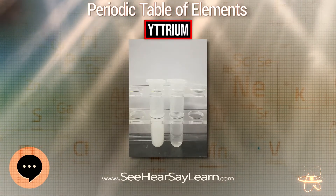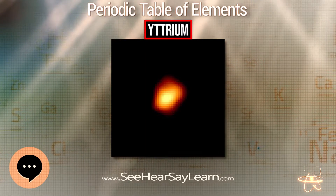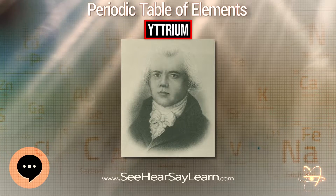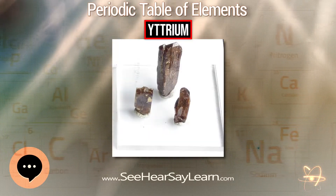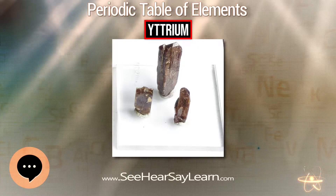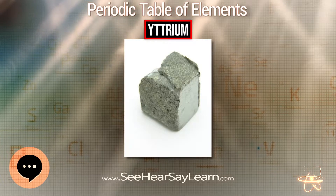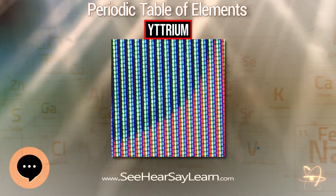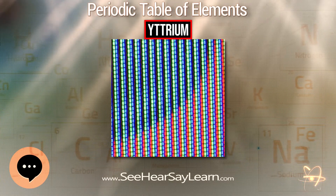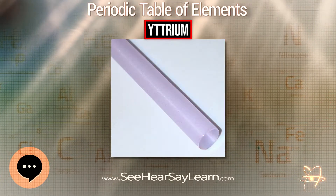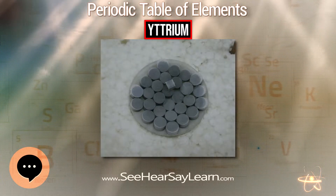Yttrium often falls in the same range for reaction order, resembling terbium and dysprosium in its chemical reactivity. It is so close in size to the so-called yttrium group of heavy lanthanide ions that in solution it behaves as if it were one of them, even though the lanthanides are one row farther down the periodic table. The similarity in atomic radius may be attributed to the lanthanide contraction. One notable difference is that yttrium is almost exclusively trivalent, whereas about half the lanthanides can have valences other than three.